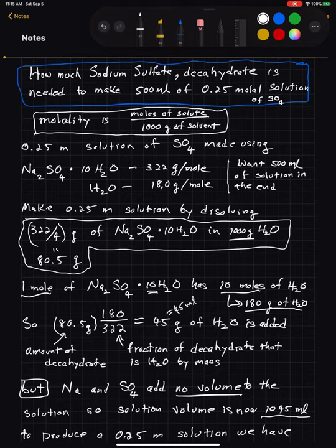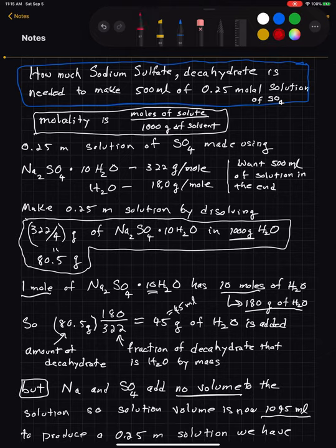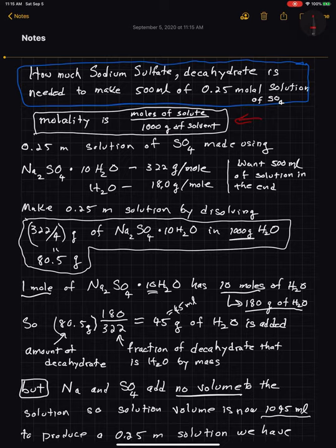First, let me tell you what the definition of molality is. Molality is the moles of solute — that is the moles of sodium sulfate decahydrate, I'm just going to call that decahydrate for now — per 1000 grams of solvent, which we're going to take to be water. So it's how much decahydrate in moles we have to add to a kilogram of water. That's pure water, not solution, and that adds a slightly interesting complication to the problem.